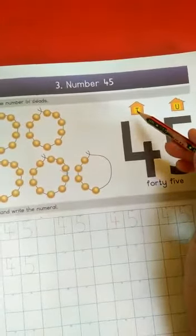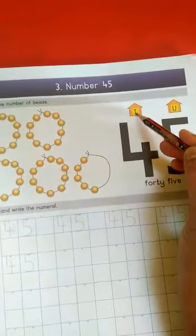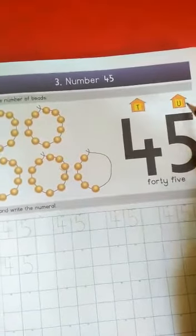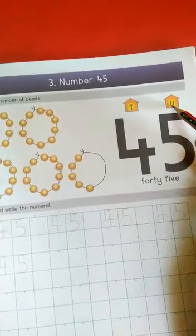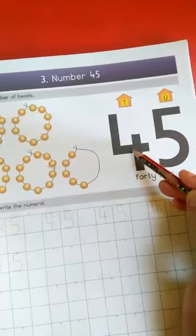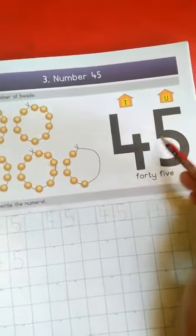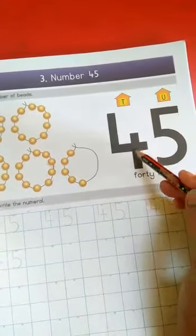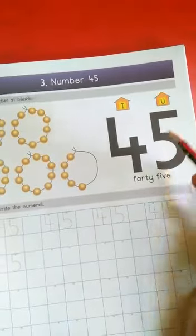Now this is T. T means set of 10, set of 10 objects. U means units or single number. This is 4 and this is 5. 4, 5, 45. 4, 5, 45, good.